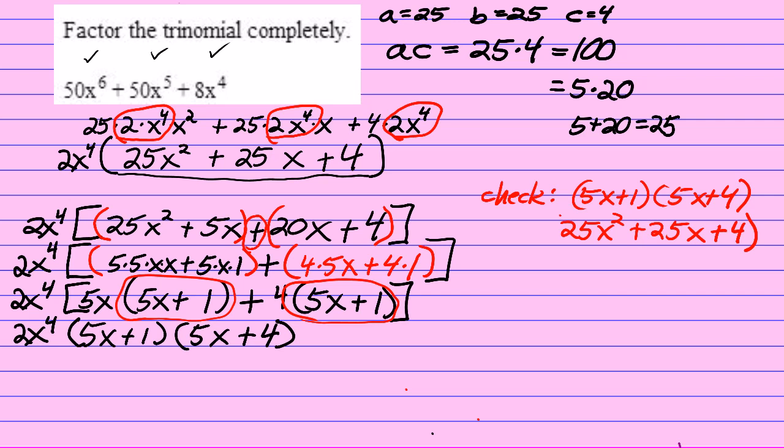And then I'm going to multiply by 2x to the fourth. We can't forget it was there. And I'm going to distribute 2x to the fourth to the 25x squared, to the 25x, and to the 4. That will give me 50x to the sixth plus 50x to the fifth plus 8x to the fourth. And that's exactly what I started with, which means that my factorization is correct.